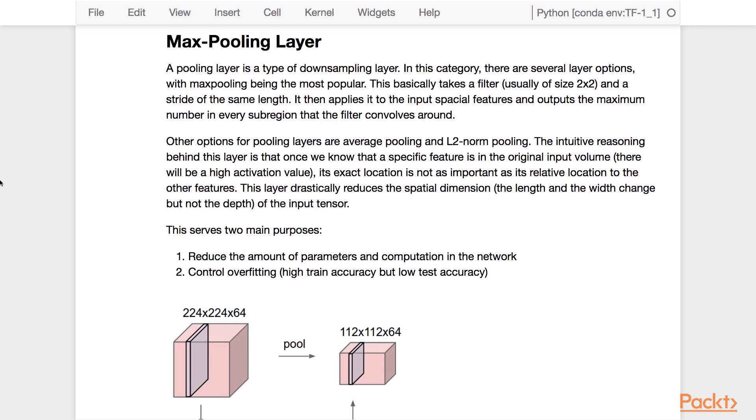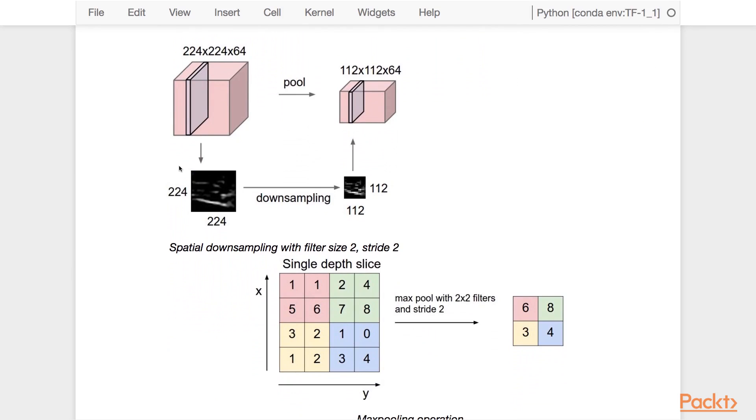It reduces the amount of parameters and computation in the network and controls for overfitting. In this image, you can see that the image was downsampled by a factor of 2, but the number of feature maps didn't change. Max pooling basically extracts the most active features in the image while reducing the data size.